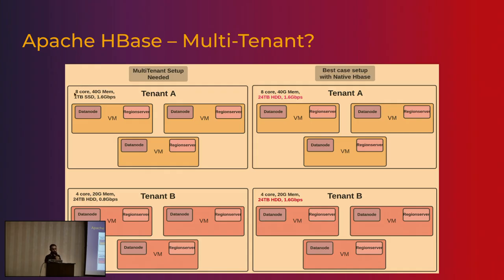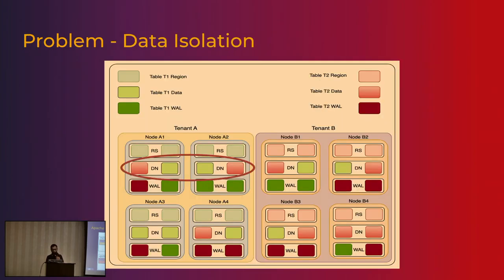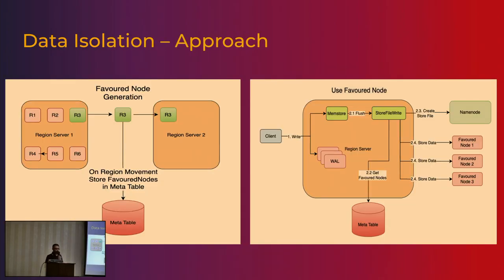Let's talk about the first problem: data isolation — where you can see the second layer, the data stored on disk. We explored options on how to isolate it, because regions are already isolated. When we started in 2018 or so, a few folks from Yahoo had put out a patch for this. Some aspects were merged to mainstream, and some aspects are available from HBase 2.0. That doesn't fully solve the entire problem, but it solves some parts.